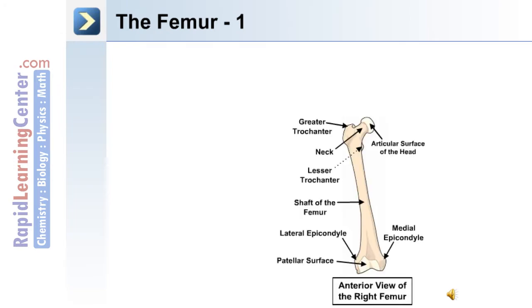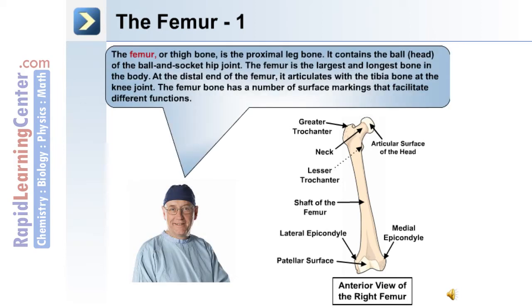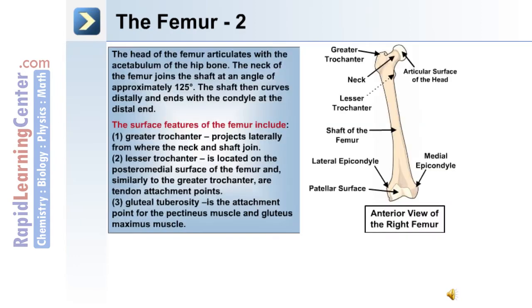The first bone of the lower extremity we'll discuss is the femur or thigh bone, shown here in this anterior view. At the proximal end is the articular surface of the head, which articulates with the hip bone. There's also a greater trochanter, a neck, and a lesser trochanter. The head of the femur articulates with the acetabulum of the hip bone.